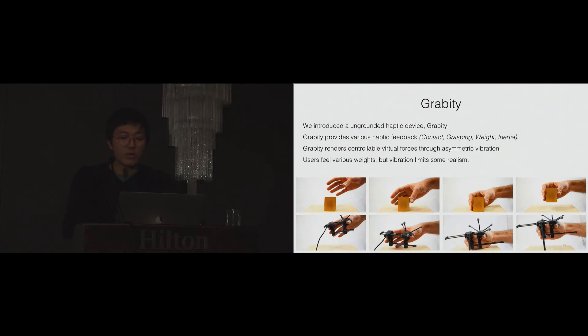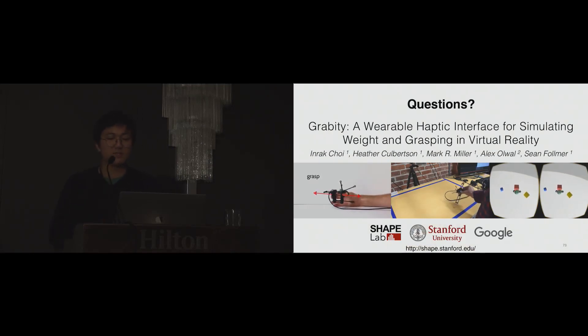In this talk, we introduced Gravity. Gravity renders four types of haptic feedbacks such as contact, grasping, weight, and inertia. Gravity renders controllable virtual forces. Users feel various weights from the device, but vibration currently limits some realism. Thank you very much for your attention and I'm ready for questions.